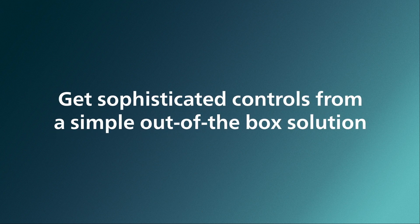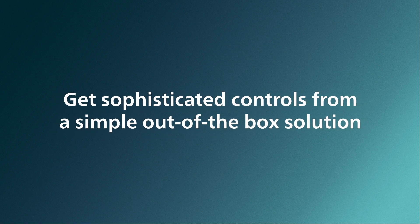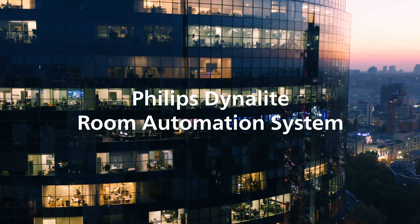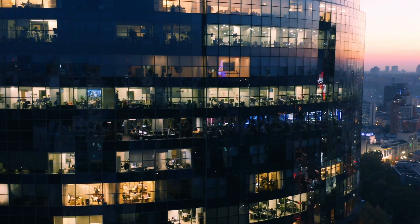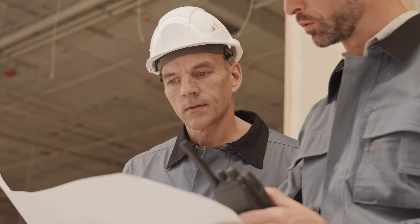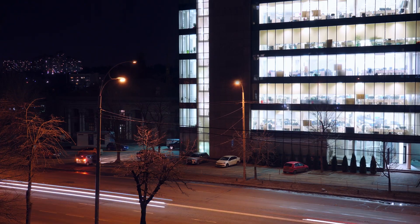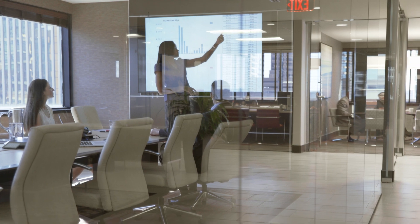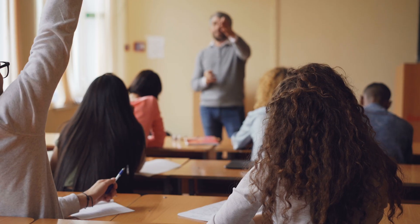Get sophisticated controls from a simple out-of-the-box solution. The Philips Dynalight room automation system has been carefully designed to help clients get jobs done quickly while saving every step of the way. It is hassle-free, scalable, intuitive, and code compliant, while still flexible enough to adapt to different user needs.